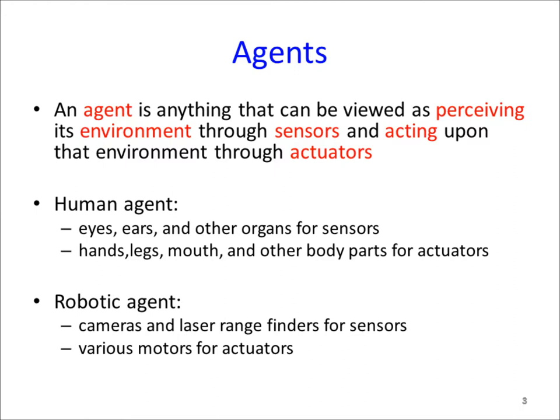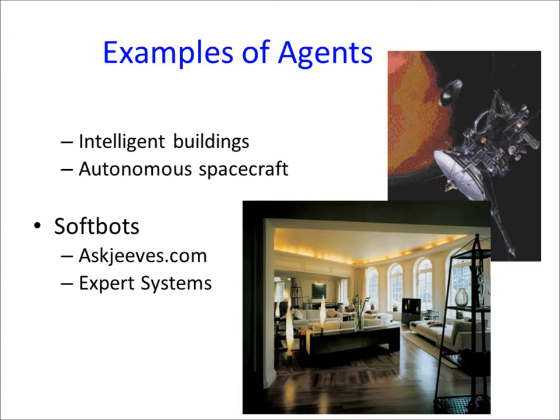Google is technically an agent — you provide a query, it searches and comes back with an answer. Buildings can be agents: as soon as you leave, the light goes off or you get a beep that your wallet is inside. You can add more and more intelligence. The point is that all of these things are examples of agents.